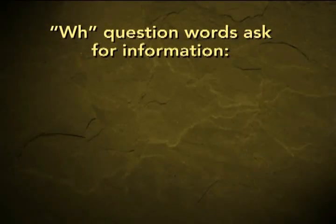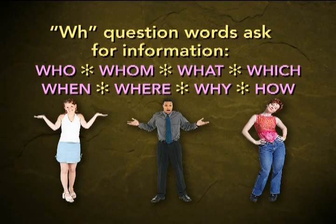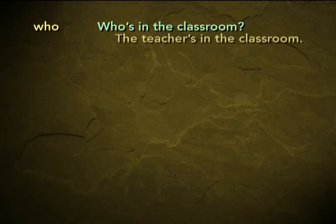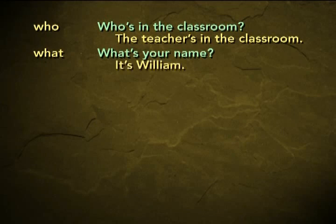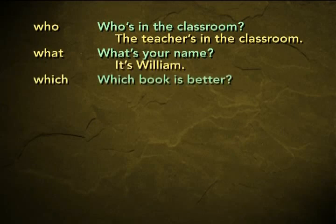Now let's summarize our use of the question words. Look at the graphic. WH question words ask for information. The question words are: who, whom, what, which, when, where, why, and how. Who — 'Who's in the classroom?' The teacher, for example. What — 'What's your name?' It's William. Which — 'Which book is better?' This book is better. When — 'When is your vacation?'